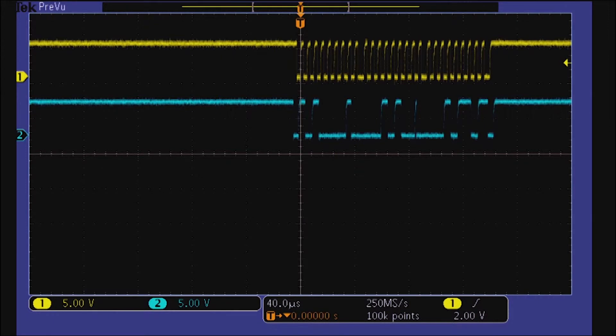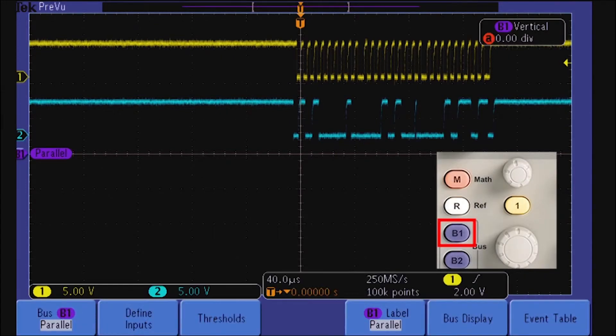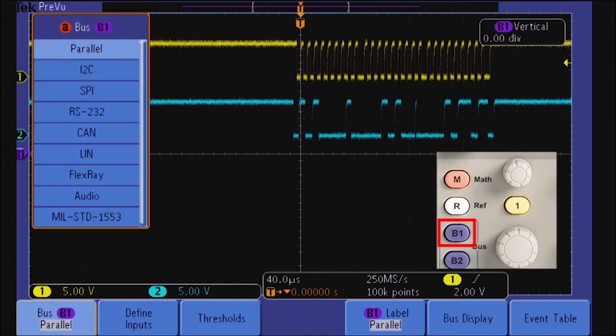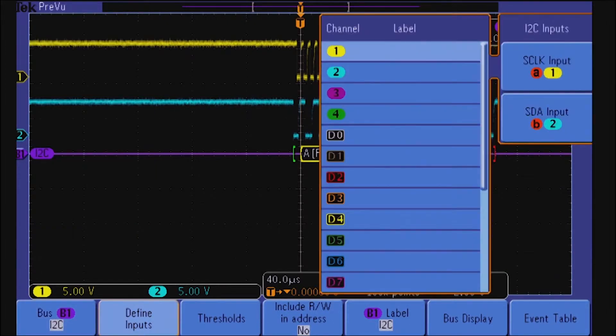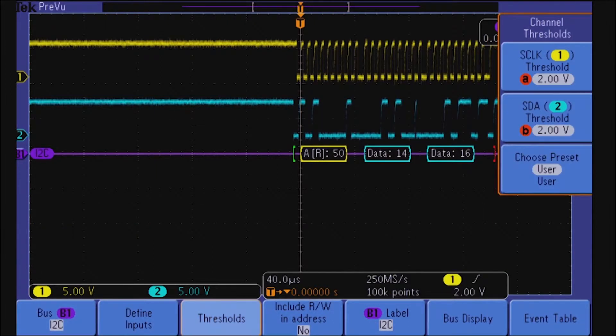Configuring the scope is as easy as defining the I2C clock and data signals and setting the logic thresholds. Once it's set up, the scope will automatically decode I2C messages.